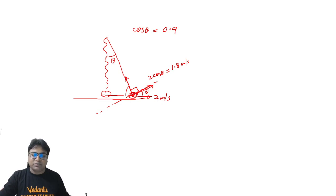Before the string became taut, this particle was traveling with a speed of 2 meter per second. So the angular momentum about this point of suspension can be calculated as 2 into 0.1, that is m into v, into perpendicular distance which is 0.9. This becomes 2 into 9, which is 18, so it goes to 0.18 SI units.